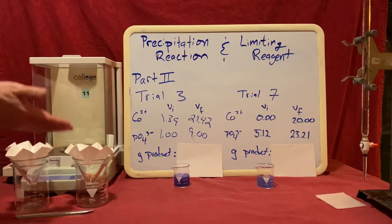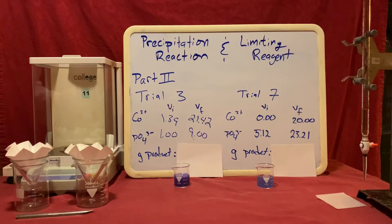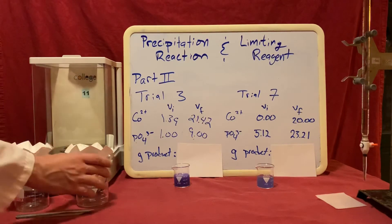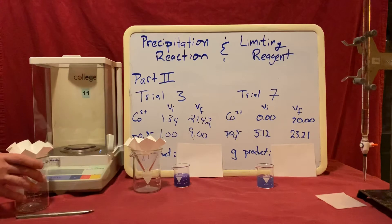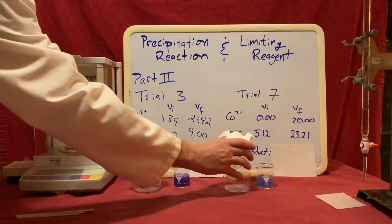This way, when my product ends up on the filter paper later, I'll be able to subtract out the mass of the filter paper in order to determine the mass of the product. So here's my trial 3 filter paper, here's my trial 7 filter paper.